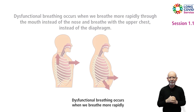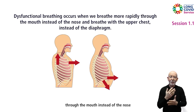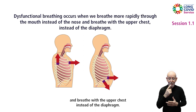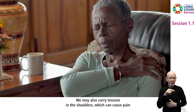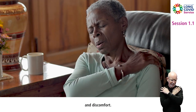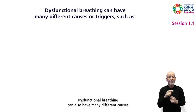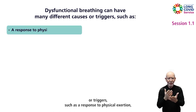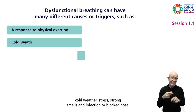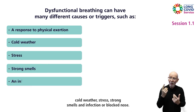Dysfunctional breathing occurs when we breathe more rapidly through the mouth instead of the nose, and breathe with the upper chest instead of the diaphragm. We may also carry tension in the shoulders which can cause pain and discomfort. Dysfunctional breathing can also have many different causes or triggers, such as a response to physical exertion, cold weather, stress, strong smells, and infection or a blocked nose.